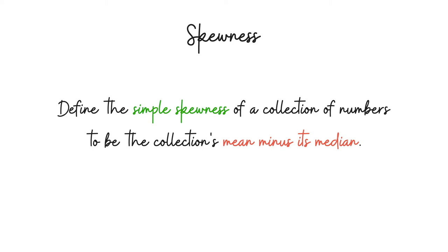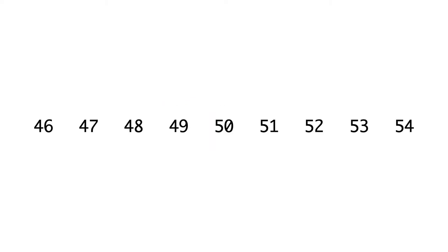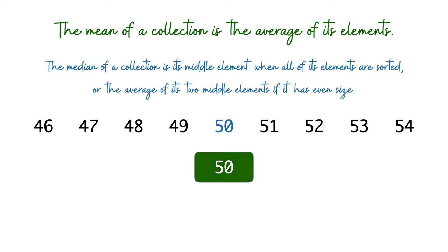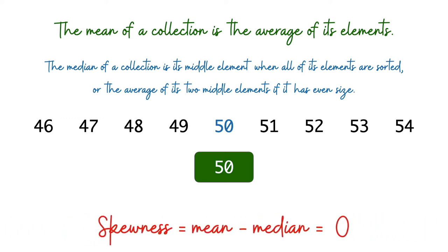Let's go over an example to make sure we're on the same page. Here we have a collection of numbers that look pretty neat — by inspection, the mean is 50 and the median is also 50. The median is the middle element in sorted order. If the list has an even size, the median is defined as the average of the middle two elements. For this particular list, the skewness is zero — the mean and median coincide.